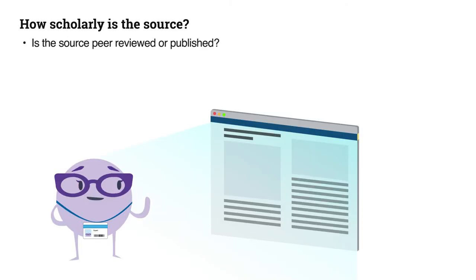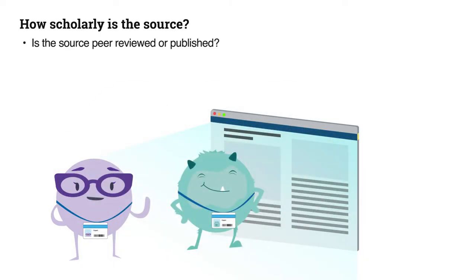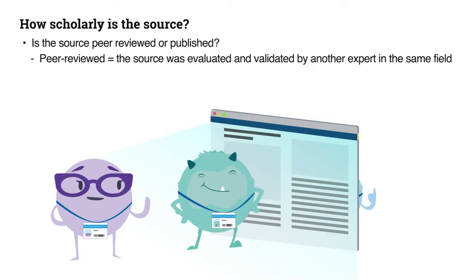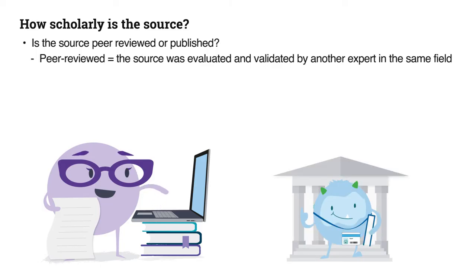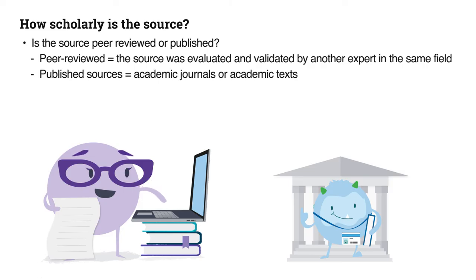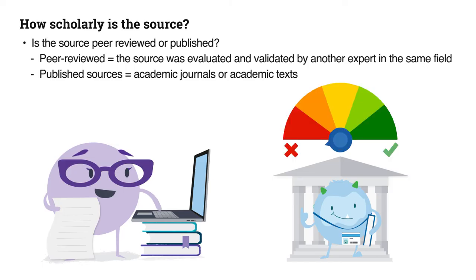Next, a big clue will be if the source has been peer-reviewed or published. Peer-reviewed means a source was evaluated and validated by another expert in the same field with similar competencies. Most academic journals require all sources to be peer-reviewed before publication. Sources that are published will be found in academic journals or academic texts. Peer-reviewed or published work would most often qualify as scholarly and increase the ranking and source credibility.